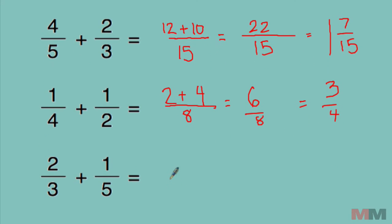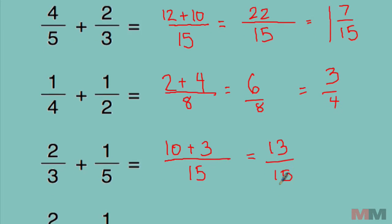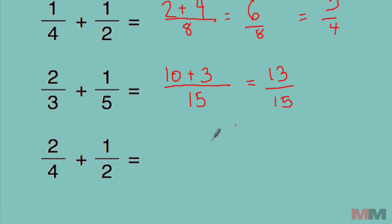Let's keep trying it again until you master it. 5 times 3, that's 15. 2 times 5, that's 10. I'm going to add that result to the other side. 1 times 3, 3. Simplify it from there. 10 plus 3, that's 13 over 15. That's simplified. I can't do anything else with that.